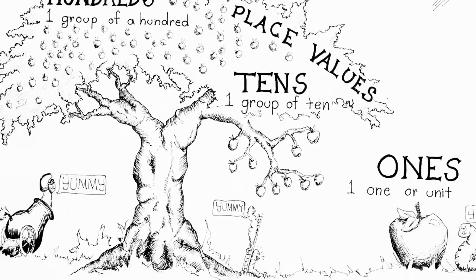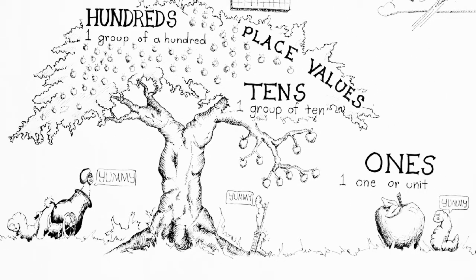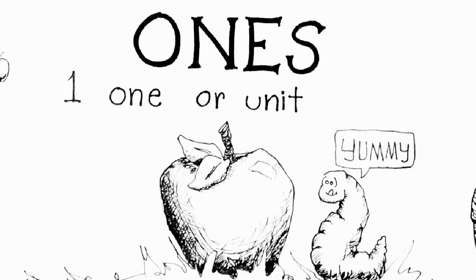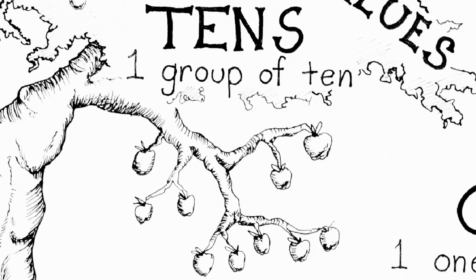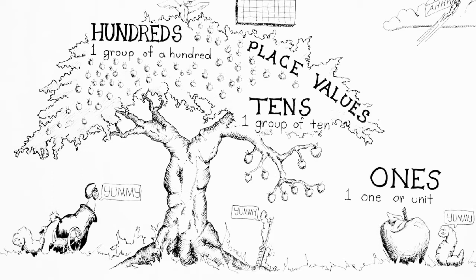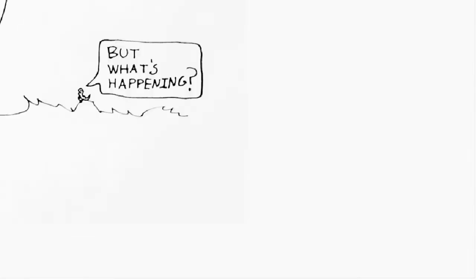If we keep going to the left and get to the hundreds place, the one is equal to one group of a hundred, and we can draw that like one tree with a hundred apples on it. So even though we still have one, one, one: the one in the ones place is equal to one apple, the one in the tens place is equal to one branch with a group of 10 apples on it, and if we move to the hundreds place it's equal to one tree with a hundred apples on it.